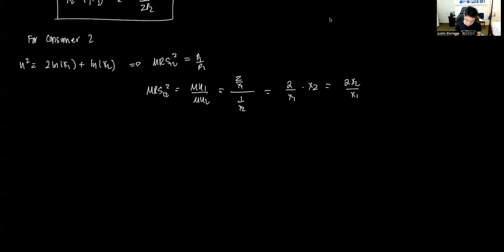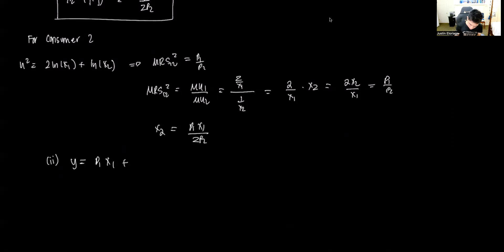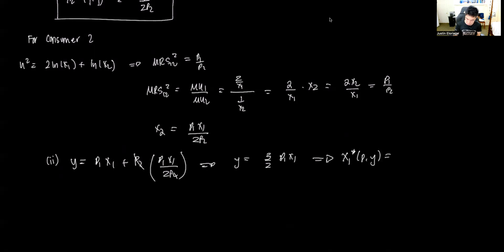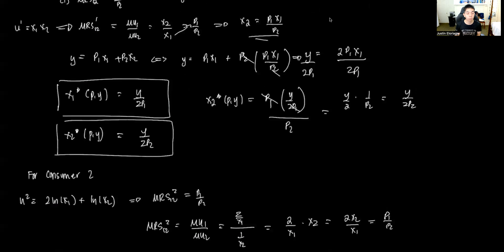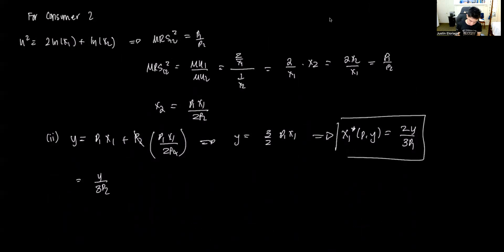We equate 2x2/x1 to P1/P2, giving the intermediate form x2 = P1·x1 / (2P2). Using the budget constraint y = P1·x1 + P2·x2, and substituting x2, the P2 cancels and we get y = (3/2)·P1·x1. Therefore x1*(P,y) = 2y / (3P1) and x2*(P,y) = y / (3P2). We now have the Marshallian demands for both consumers.